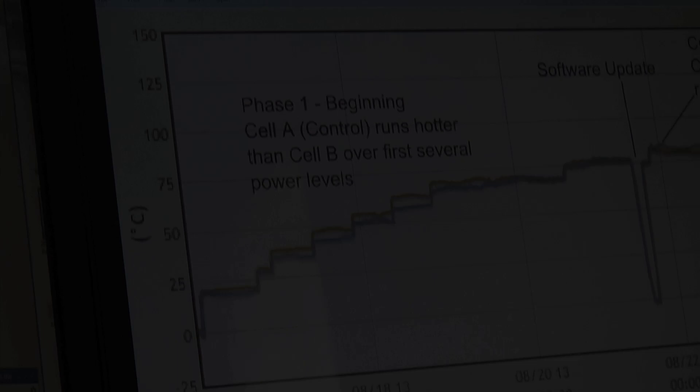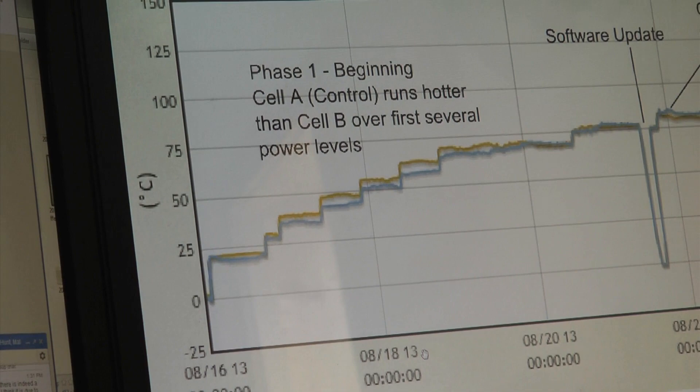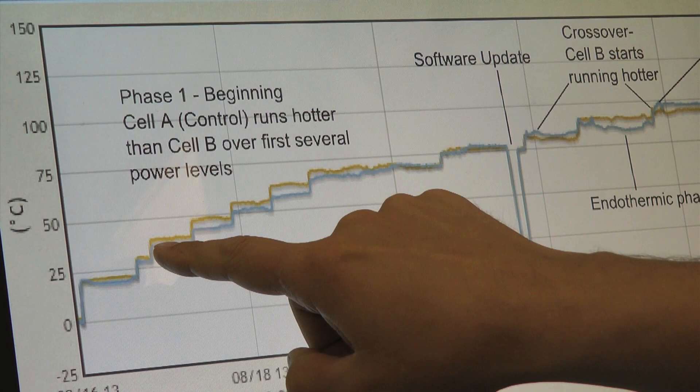The experiment began on around the 16th of August, and we stepped the power up. We have two identical cells running in differential mode, and we're looking at the difference. The gold color is the external temperature minus the ambient for cell A, which is our control cell. And you see that was running a little hotter than the blue line, which is the active cell.